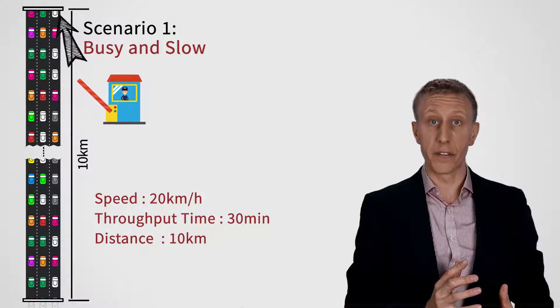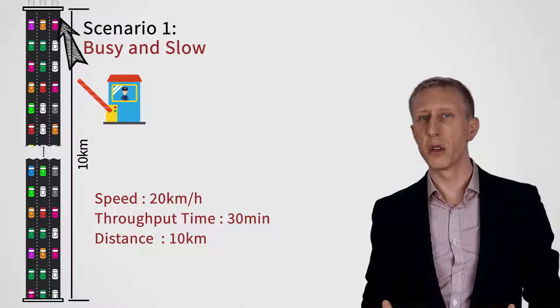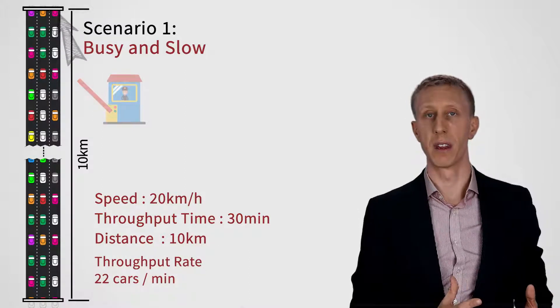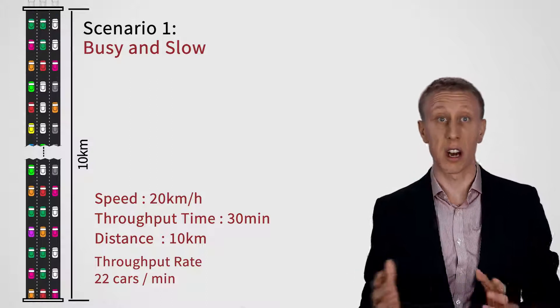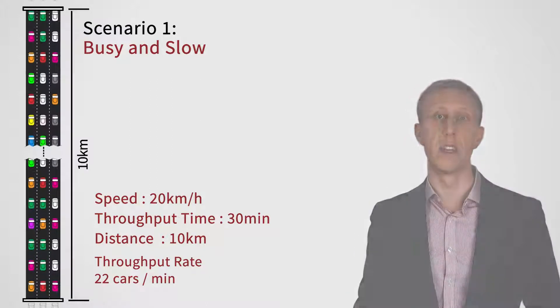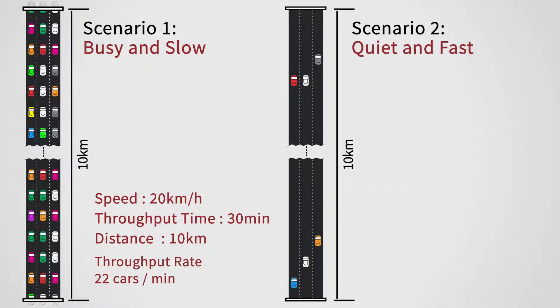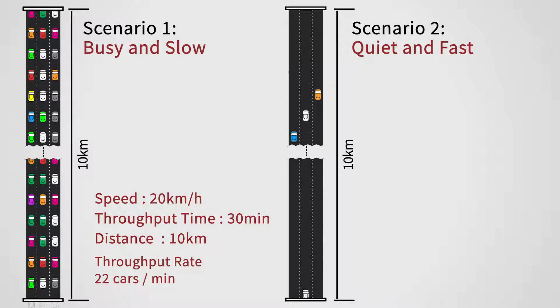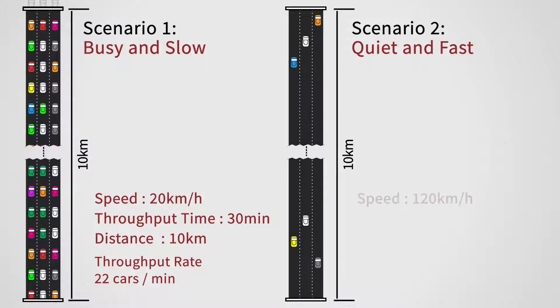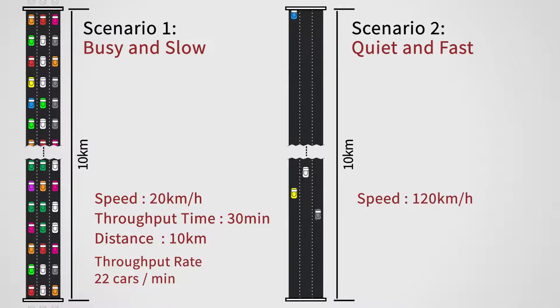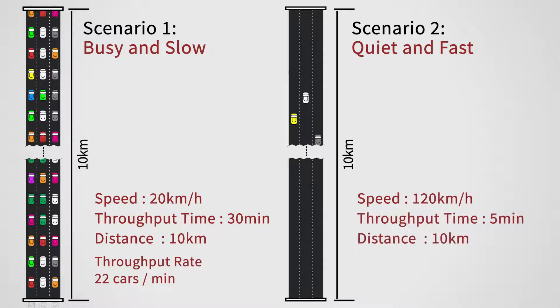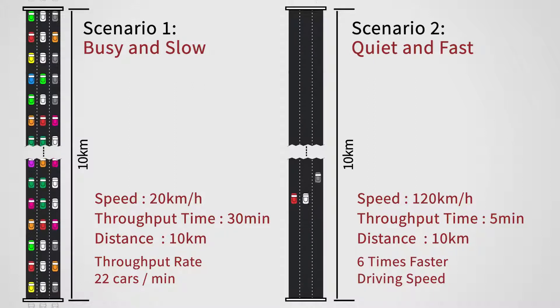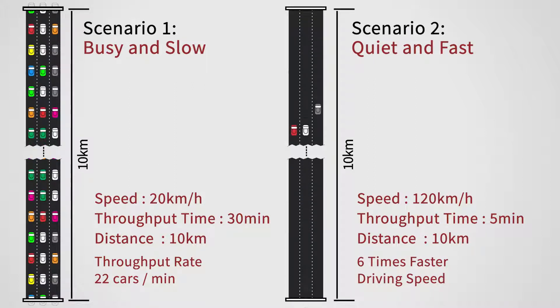If you were to stand at the end of the toll road with your stopwatch and counter, you'd see that something like 22 cars per minute get through the toll road. That partly depends on exactly how close the cars are to each other, but anyway. On another day, we get our right-hand side example. The same road seems a lot quieter. There are lots fewer cars on the road, and with the extra space, they zoom along at 120 kilometers an hour, whizzing along the 10-kilometer toll road in just five minutes. That's six times faster driving speed, and so six times less time spent driving down the road.